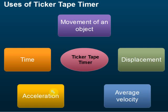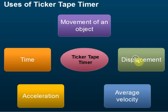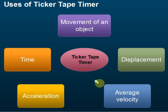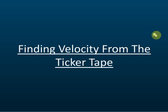So it's a very useful instrument. We use it to measure time and displacement, and then by using time and displacement we can find velocity and acceleration. Those are the uses of a ticker tape timer — now let's look at finding velocity from the ticker tape.